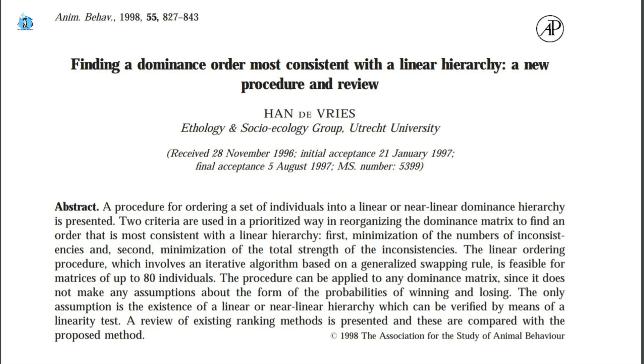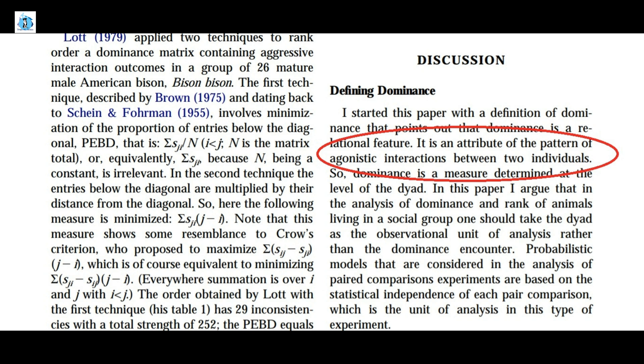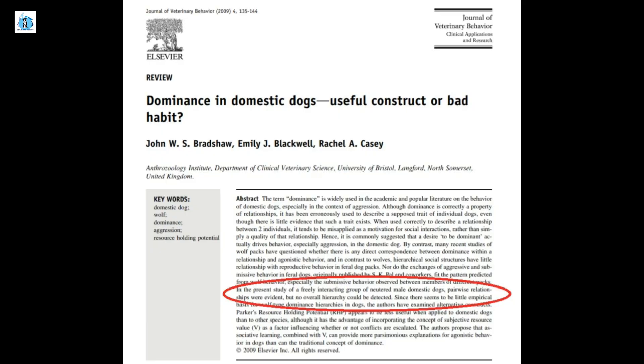Finally, in a paper looking at a variety of species, it is mentioned that dominance is an attribute of the pattern of agonistic interactions between two individuals. To make things even more interesting, a paper from 2009 states that in a freely interacting group of neutered male domestic dogs, pairwise relationships were evident, but no overall hierarchy could be detected. As we can see, the definition of dominance can be really complicated, and whether or not we have a dominant animal, or are witnessing dominance or hierarchy or an alpha animal, is really hard to be sure about.